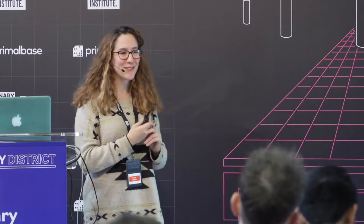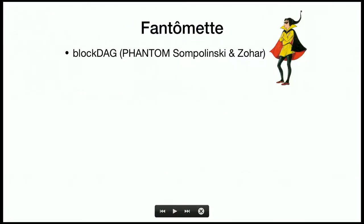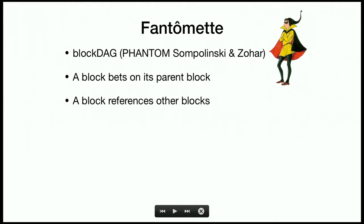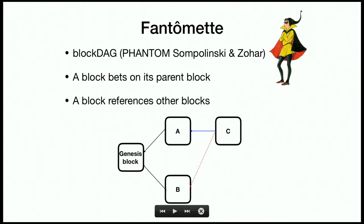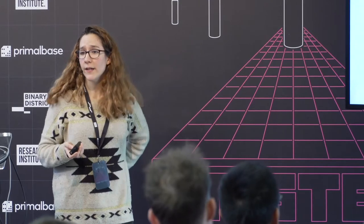Now the broader PhantomAIDS protocol uses a block DAG. In our protocol, a block bets on its parent block — meaning a block is created on top of another block, similar to a blockchain. However, because we use a block DAG, a block also references other blocks. For example, block C was elected leader on top of block A — block C bets on A. But block C also indicates it's aware of block B, even though it's not extending that chain. That's the idea of block DAG.